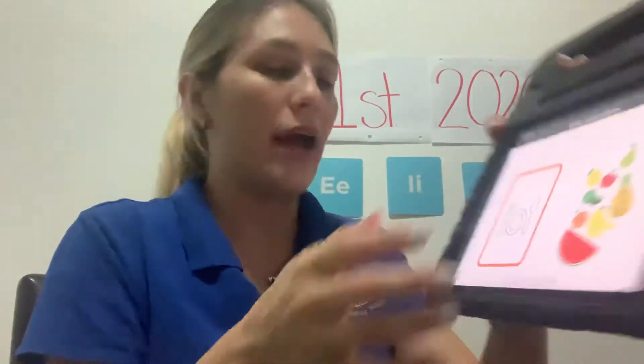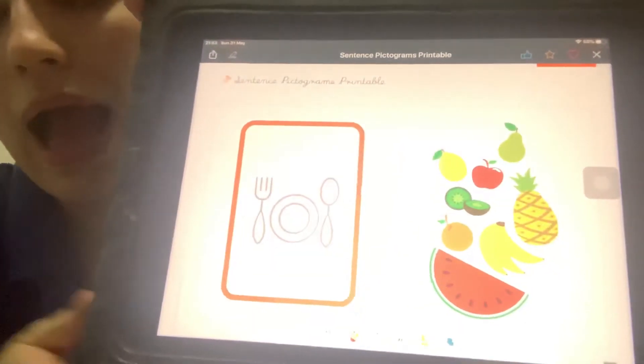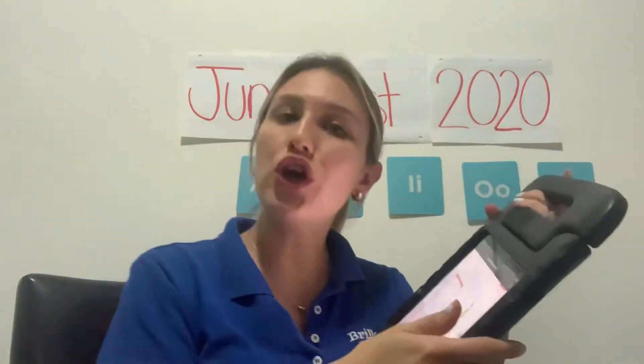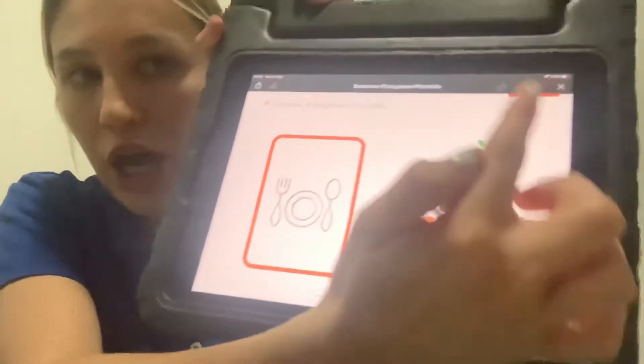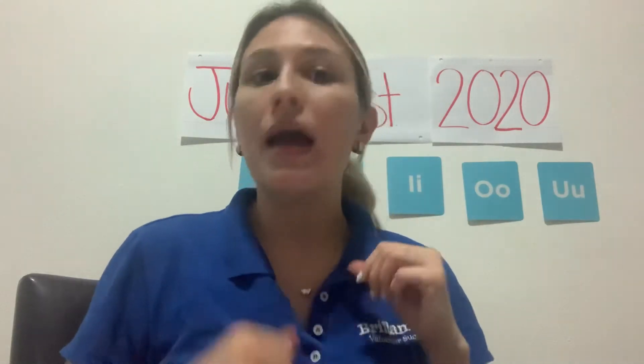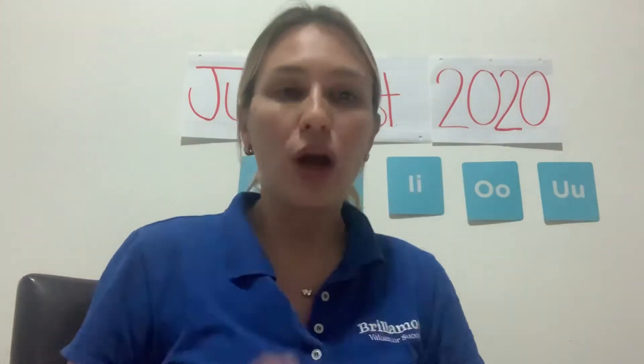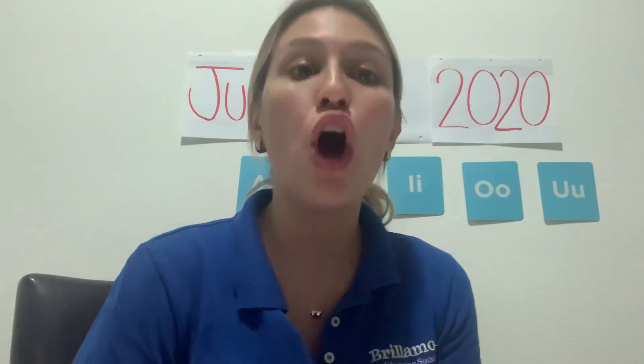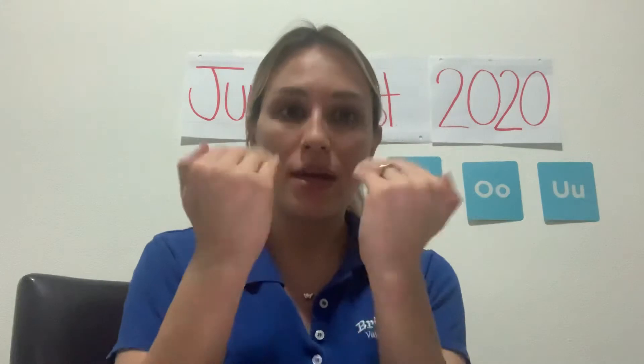Now the next one. These are fruits, and the picture means 'eat,' so you are going to say: 'I eat fruit.' Repeat the complete sentence with me: 'I eat fruit.' Very good, kids!